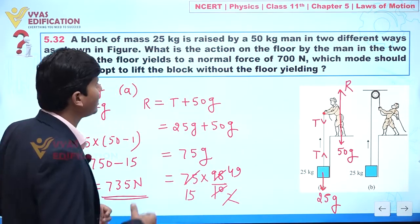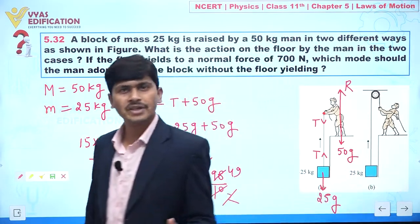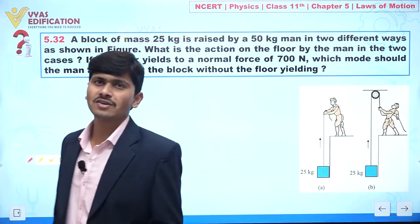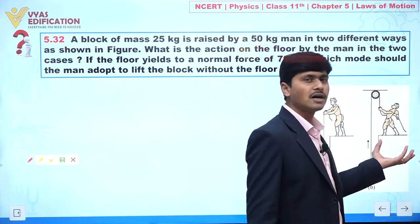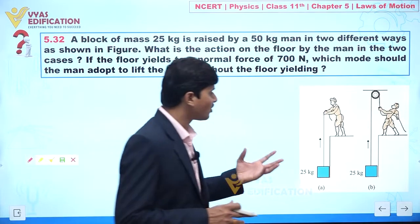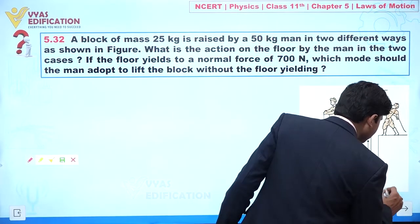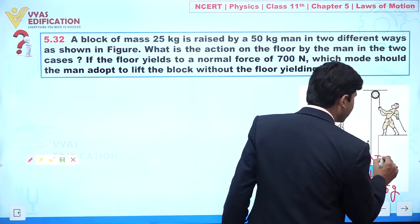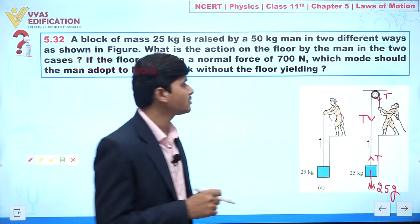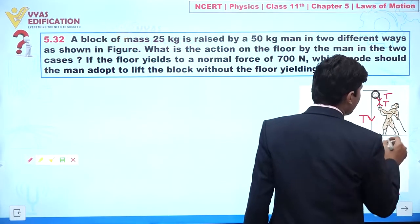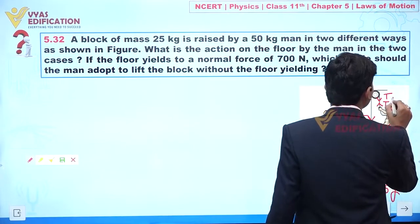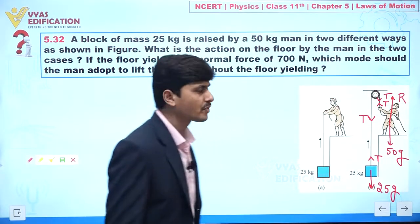Now let us analyze method B. The objective is to calculate the reaction force exerted by the floor on the person. In method B, a force of 25G acts on the block, and the person is holding the string — tension T acts upward at the person's hands. The person's weight 50G acts vertically downward, and a normal reaction capital R acts upward from the floor.